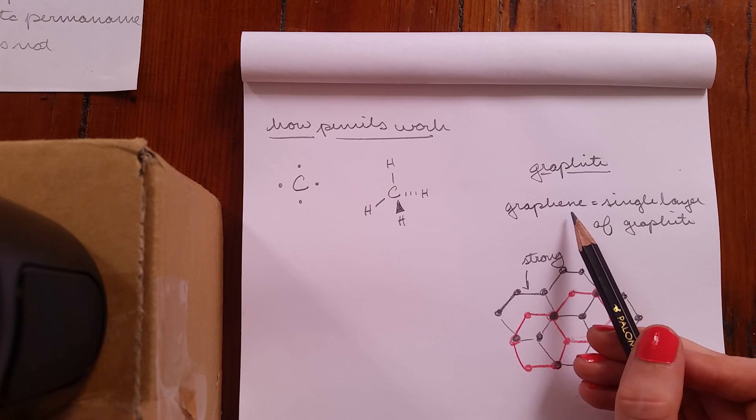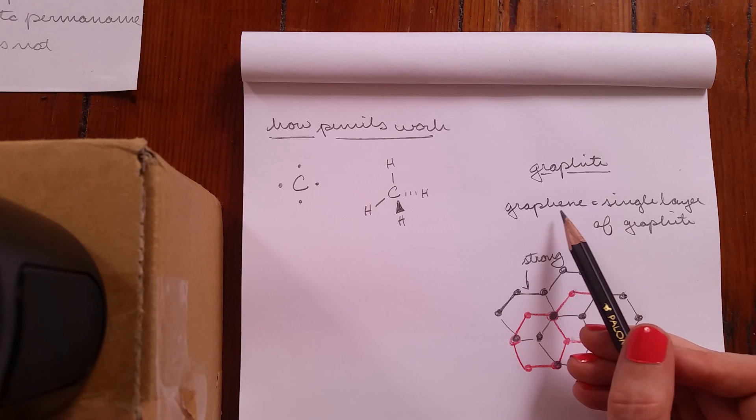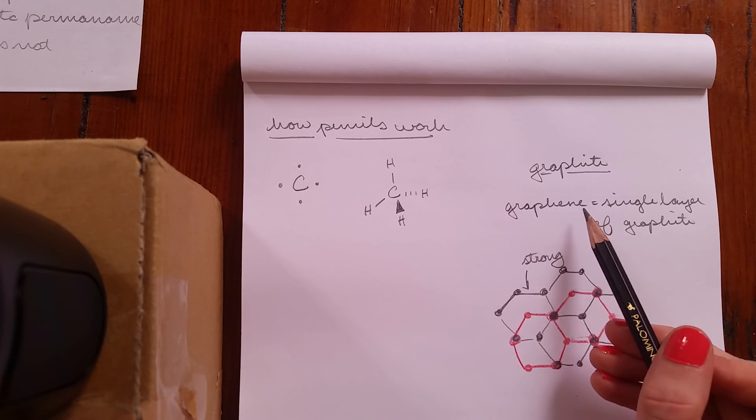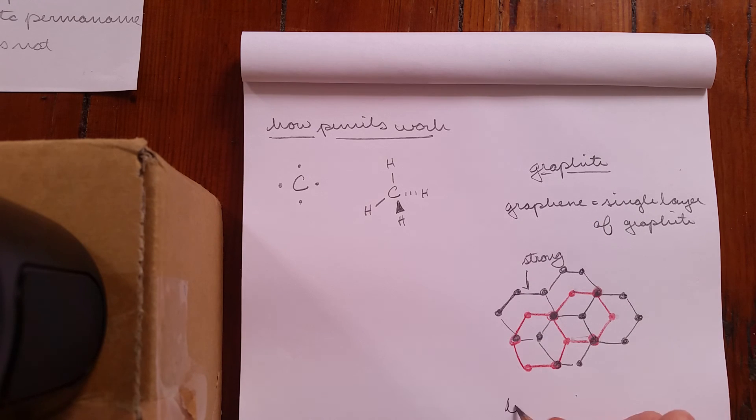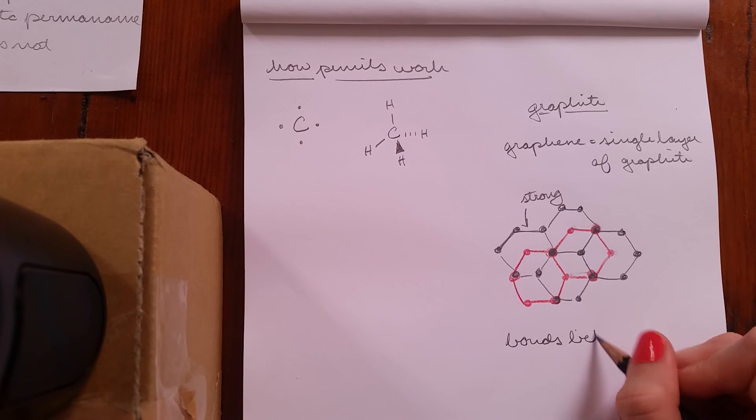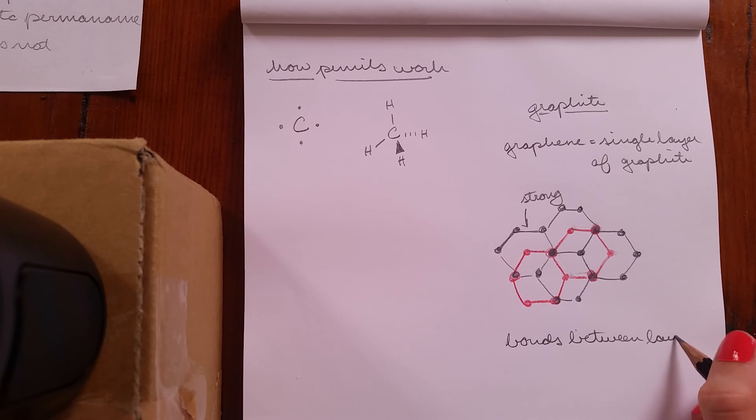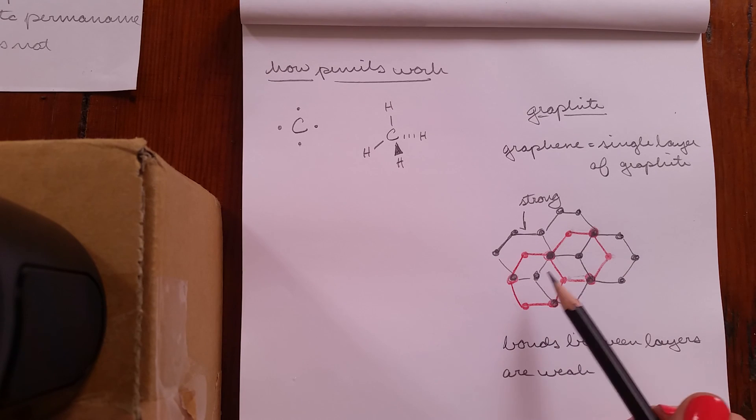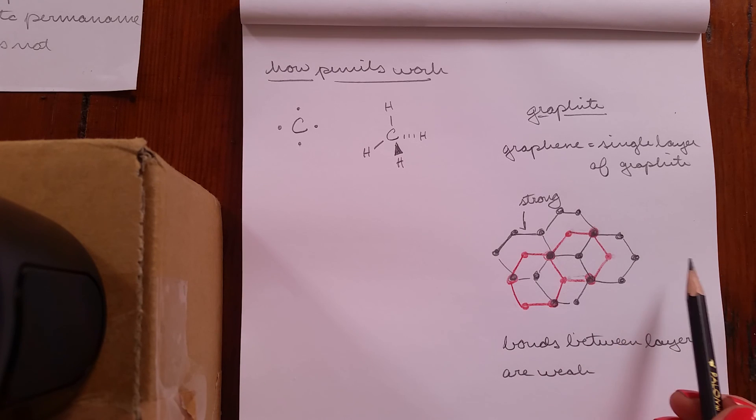So what that means is that one layer of graphite can slough off of the rest of it very easily. And that's actually how I believe they originally isolated graphene, was they just drew really dark with a pencil. So you had a bunch of graphite. And then they just stuck a piece of tape on it and peeled off a single layer. So bonds between layers are weak, which is great. That means that you can easily slide one layer of graphite off of the next layer. Awesome.